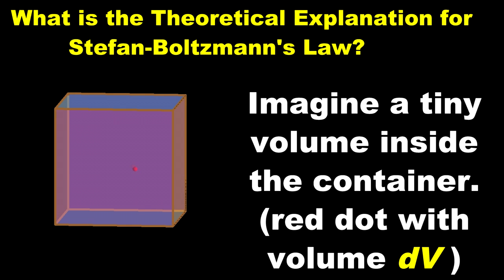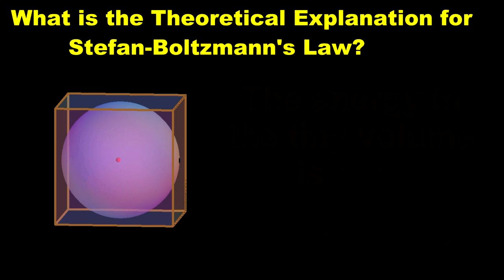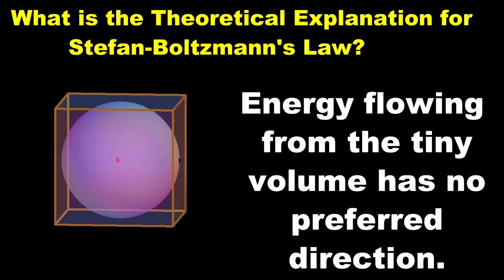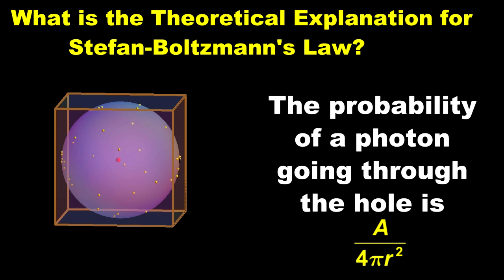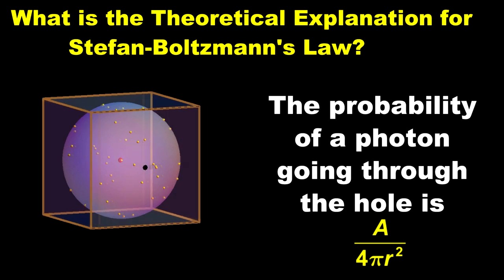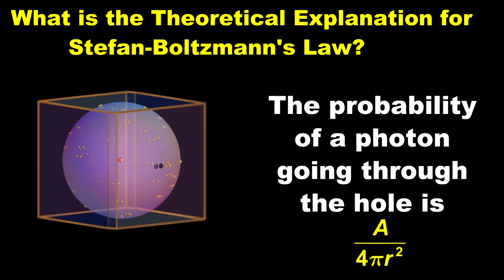Now imagine a tiny volume inside the container with volume dV. We will represent it as a red dot and it can be anywhere inside the container. The energy in the little volume is u times dV. If you draw a sphere around the little volume, then the energy flowing out has an equal chance of hitting the sphere at any point on the sphere. You can visualize this as photon particles flowing from the little red dot, with an equal chance of hitting anywhere on the whole sphere whose surface area is 4πr². If there is a hole in the sphere of area A, then the probability of a photon going through the hole is A divided by 4πr².